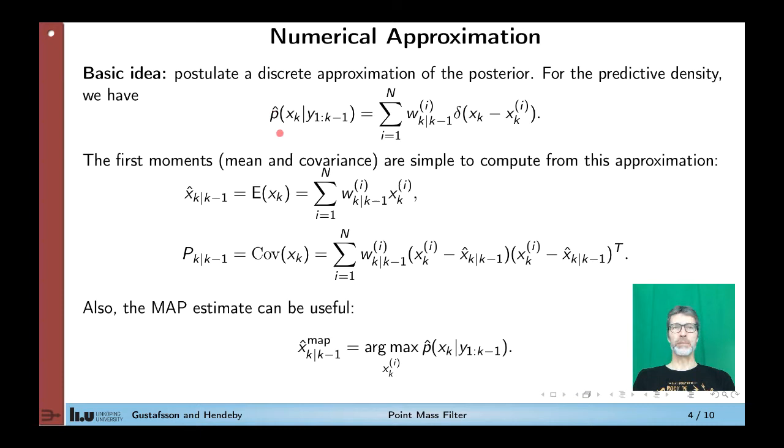And if we sum up all these particles then we get the proper density function that integrates to 1. If we have this kind of representation of the predictive density, we can evaluate the first two moments. So the mean can be seen as the minimum mean square estimate of the state. The mean is easy to evaluate, and the covariance is also quite easy to evaluate by just plugging in the definition. And in some cases also the MAP estimate is useful, which is just considering the maximum weight over the predictive density.